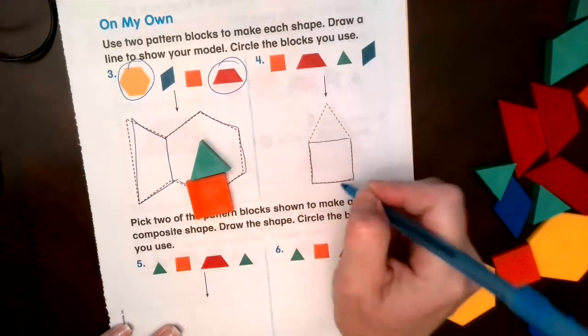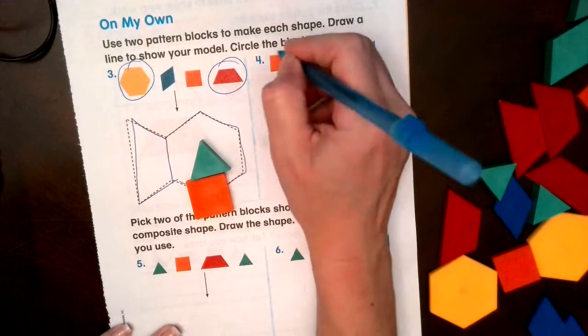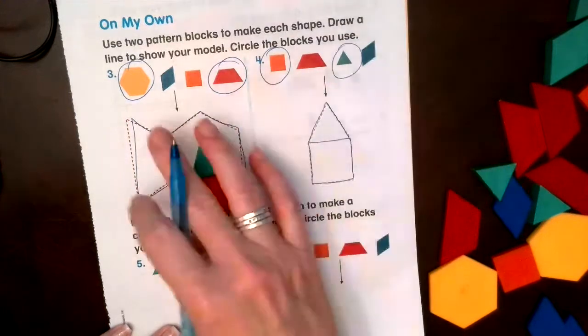Draw the line, there's our square, and on top we use the triangle. Square, triangle.